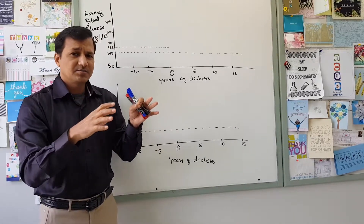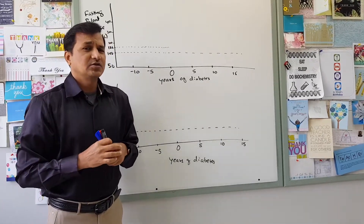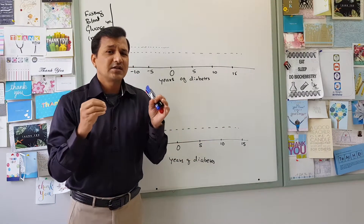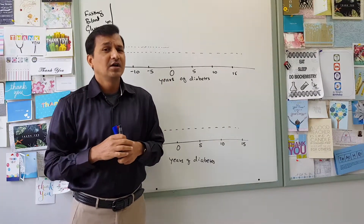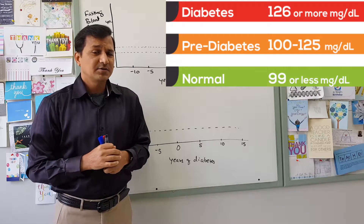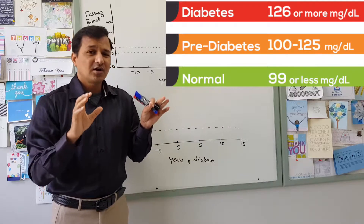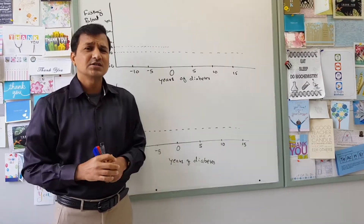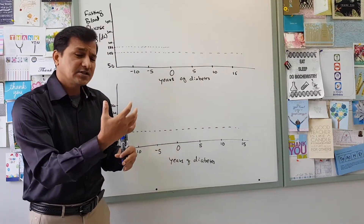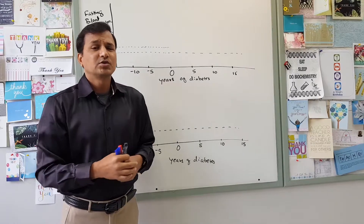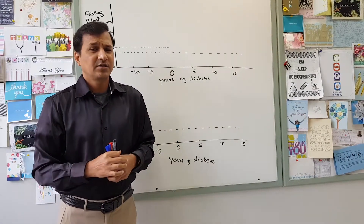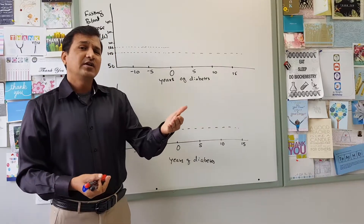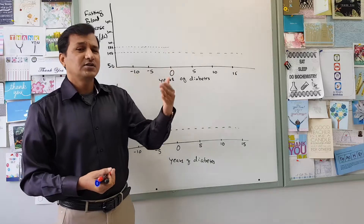Insulin resistance itself does not cause type 2 diabetes mellitus; it causes a pre-diabetes condition. What actually leads to type 2 diabetes mellitus is impairment in beta cell function. The insulin resistance predisposes to glucose toxicity and beta cell impairment, and it is that beta cell impairment which will lead to type 2 diabetes mellitus.